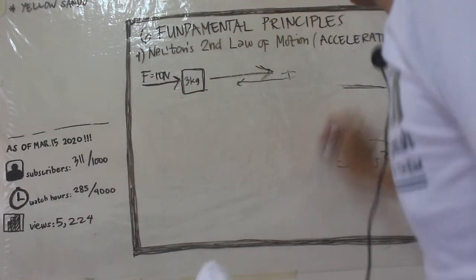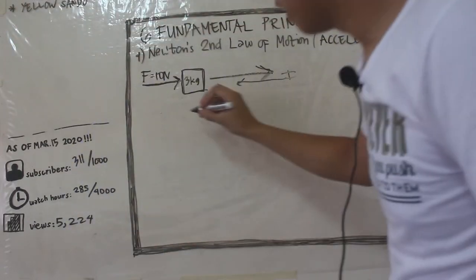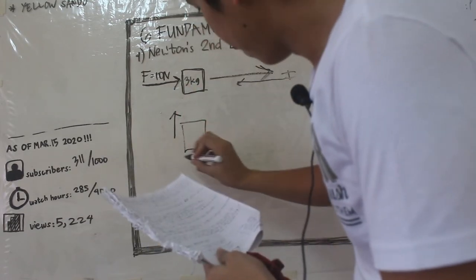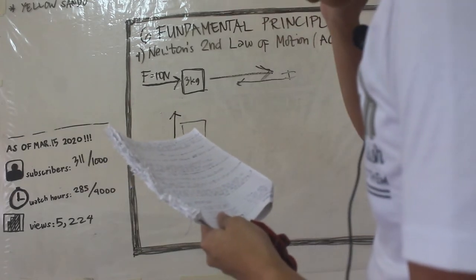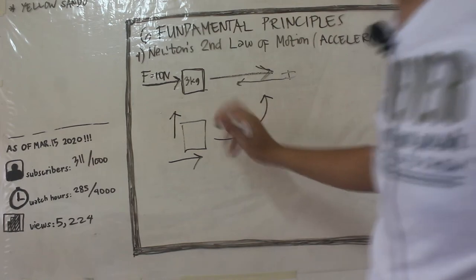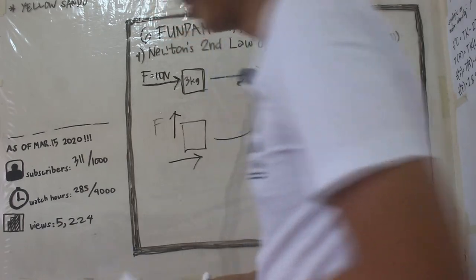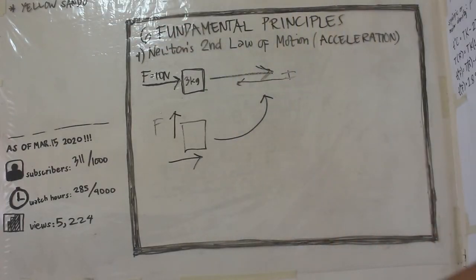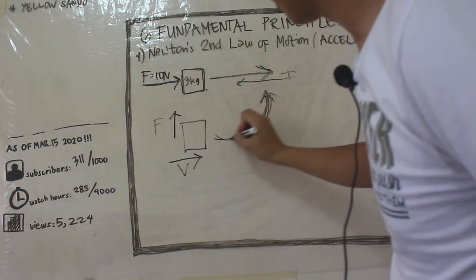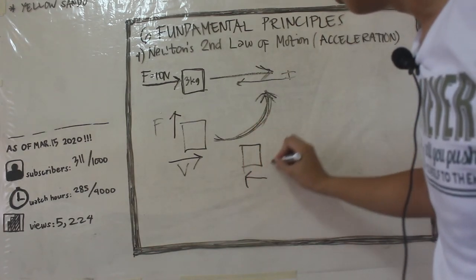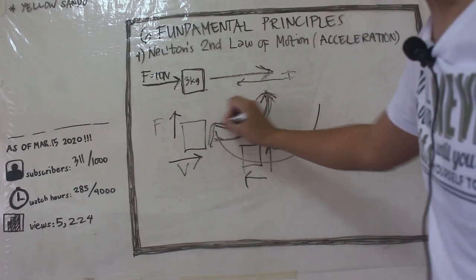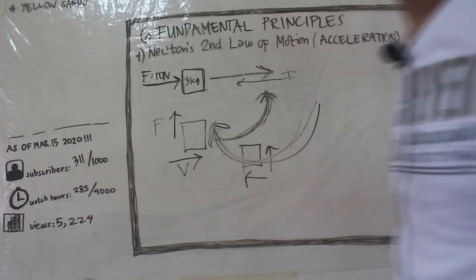For instance, if yung force at yung velocity natin are perpendicular — let's say yung force natin paganito at yung velocity natin pag-dito — so we're expecting na yung object natin magro-rotate, or rather magtuturn, sa direction ng force. So magtuturn siya in this direction. I hope na gets nyo.